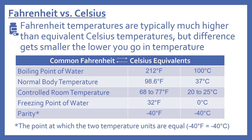The boiling point of water is 212 degrees Fahrenheit, or 100 degrees Celsius. Normal body temperature is 98.6 degrees Fahrenheit, or 37 degrees Celsius. Controlled room temperature is 68 to 77 degrees Fahrenheit, or 20 to 25 degrees Celsius.